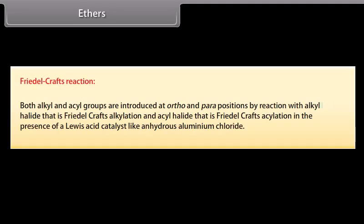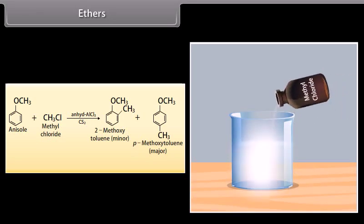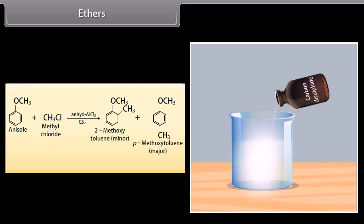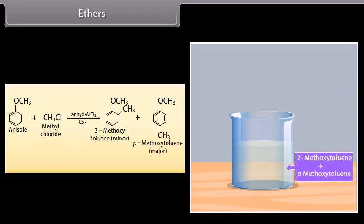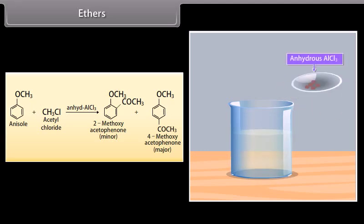Friedel-Crafts reaction: both alkyl and acyl groups are introduced at ortho and para positions by reaction with alkyl halide (Friedel-Crafts alkylation) and acyl halide (Friedel-Crafts acylation) in the presence of a Lewis acid catalyst like anhydrous aluminum chloride. Methyl chloride reacts with anisole in the presence of anhydrous aluminum chloride and carbon disulfide to form 2-methoxytoluene and 4-methoxytoluene. Acetyl chloride reacts with anisole in the presence of anhydrous aluminum chloride to form 2-methoxyacetophenone and 4-methoxyacetophenone.